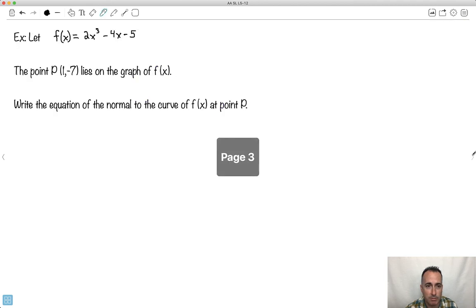Let's see how to do it with an example. So we'll do this one here. Let f(x) be 2x³ - 4x - 5. We're going to have this point P, which is (1, -7). It lies on this graph. We want the equation of the normal at P. Let's first of all look at this and say, well, what do we know from here? I know that the x value is 1 and the y value is minus 7.